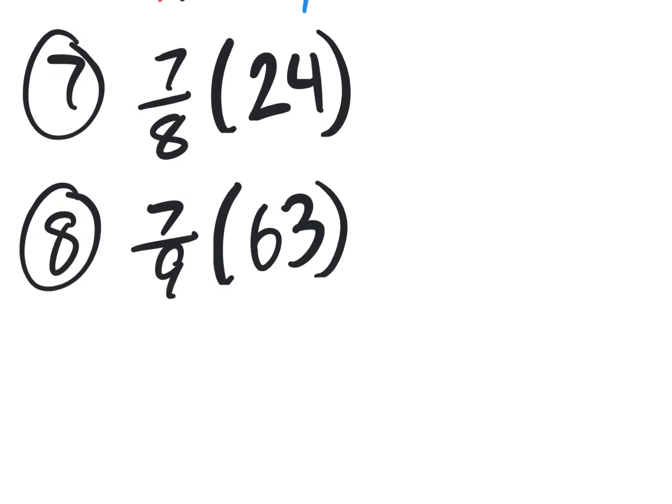Number seven and eight, last couple of ones. This says seven divided by eight — is 24 divisible by eight? Yes. 24 divided by eight is three, and seven times three is 21. Showing our work: put 24 over one, reduce 24 over eight to get three, then seven times three is 21 over one. The answer is 21.